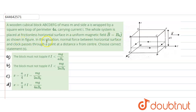As shown in the figure, in this situation the normal force between the horizontal surface and the block passes through a point x from the center. We need to choose the correct value.